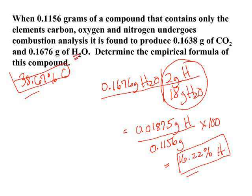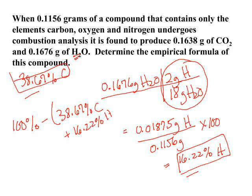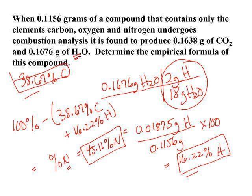Continuing on with the information that we have, we're going to take the known percent of carbon and the known percent of hydrogen and find the missing percent of nitrogen. We've got 100 percent of the total compound minus the 38.67 percent that is carbon plus the 16.22 percent that is hydrogen. Subtracting this, we get the percent of nitrogen — and again, that's the element nitrogen. The percent of nitrogen, once we do our subtraction, is 45.11 percent nitrogen. So now we have the percent of all three elements in the unknown compound.